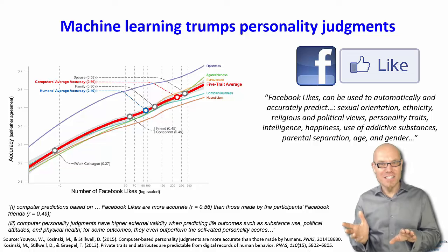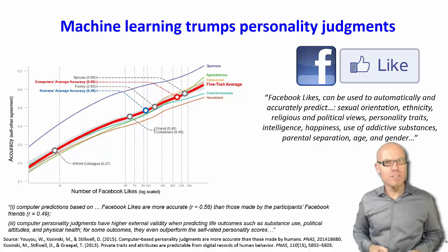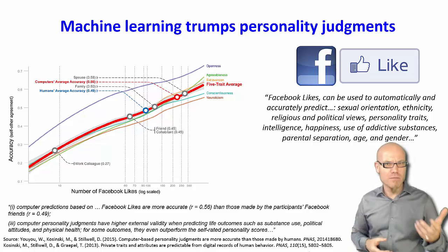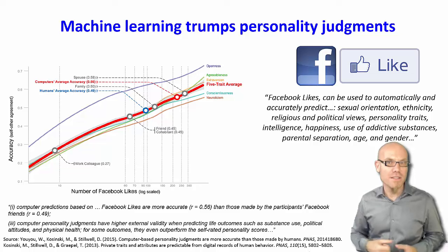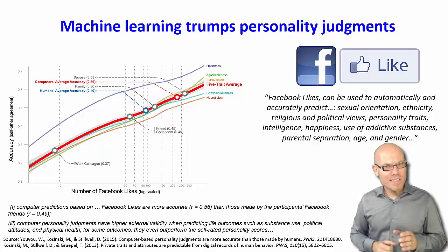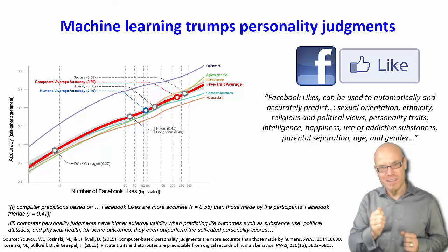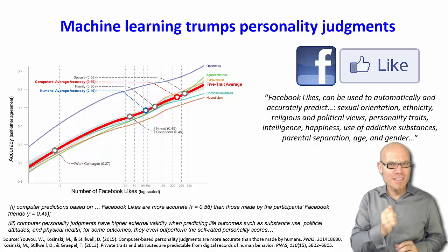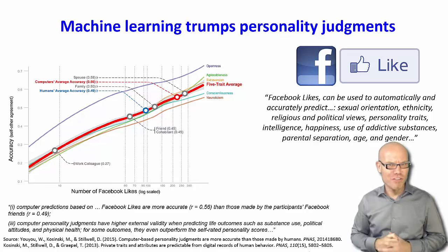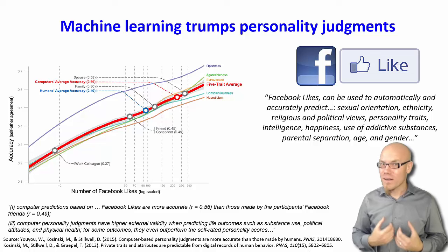Most impressively, they also asked participants what they thought their own personality was like — whether they were action-driven, emotions-driven, and so forth. And it turned out that for some cases the self-rated personality scores were less accurate compared to the test results than the machine learning algorithms that had just gone through the digital footprint of their Facebook likes. In some cases, these machine learning algorithms know us better than we know ourselves.